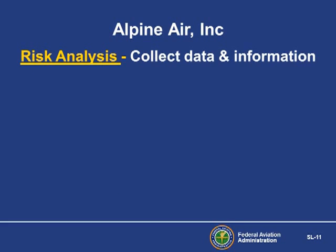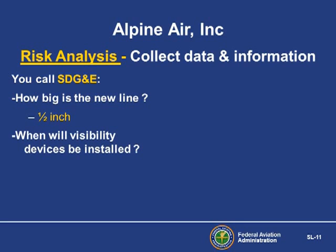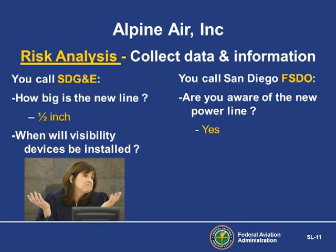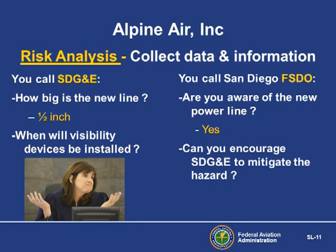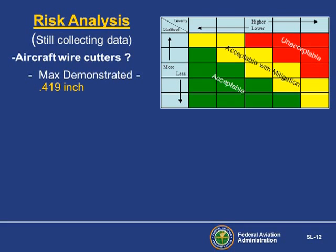Now it's time to analyze the risk that this hazard poses. You need some additional information, some data. You call the electric company and ask, 'How big is this new line?' 'Half inch,' they reply. 'When will you get visibility markers installed?' There's silence on the other end of the phone. You call the FISDO and ask, 'Are you aware of the new power line?' 'Yes,' they say. 'Can you do something about the visibility markers?' 'Yes, but it'll take some time.' You are still collecting data at this point.